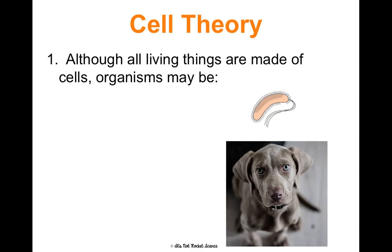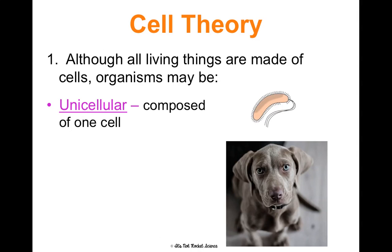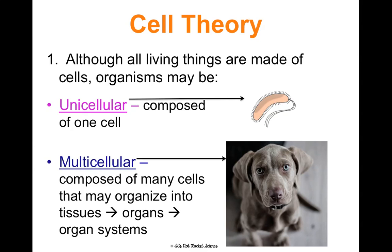Although all living things are made of cells, organisms can be unicellular or multicellular. Unicellular means an organism is literally made of one cell — lots of different microorganisms and bacteria are made of one cell. Whereas other organisms are multicellular, like a dog. Multicellular organisms are composed of many cells, and for humans, we're made of trillions of cells. Those cells are organized into tissues, tissues into organs, and organs into organ systems. So no matter how simple or complex you may be, we're all made of cells.